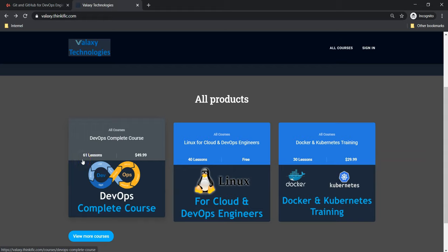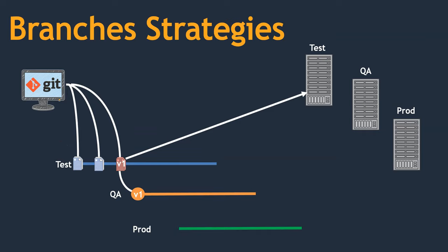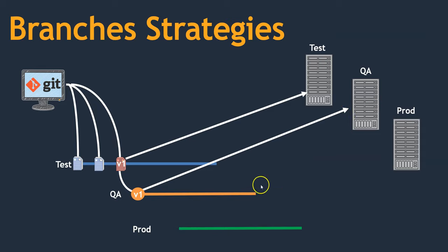Now I can pull this code onto the QA branch and from there deploy it on the QA system. This is just to make sure that this version 1 code is working fine once again. If it is working fine on the QA system, then we move on to the production system.